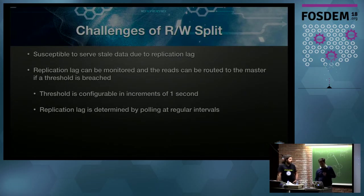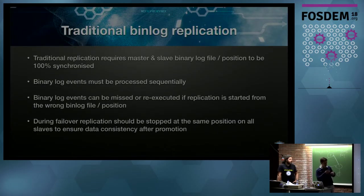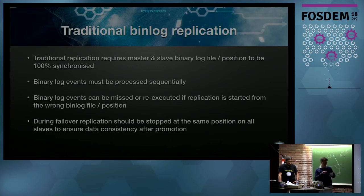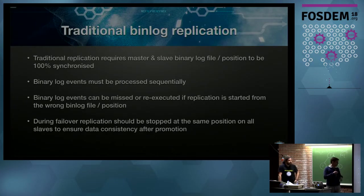We need to think about how replication works in detail to see how we can overcome this problem. With asynchronous replication, it operates with a binlog file and position. All events are written to the file, sent to the slaves, and processed one by one. Both in terms of processing, it's a bit of a bottleneck — things have to happen in sequence, and masters and slaves have to be completely synchronized. When doing failover, we have to ensure our slaves are at a certain position in order to connect to our masters.